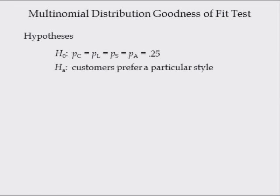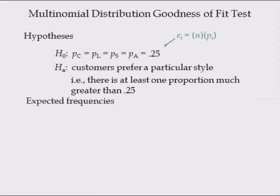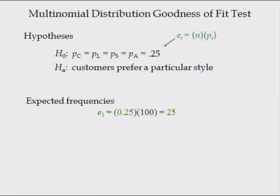The alternative hypothesis is that customers prefer a particular style — that is, there is at least one proportion greater than 0.25. The expected frequency E_i equals the sample size times the probability of the i-th category. Thus, the expected frequency of the first category equals 0.25 times the sample size of 100 homes, which equals 25.